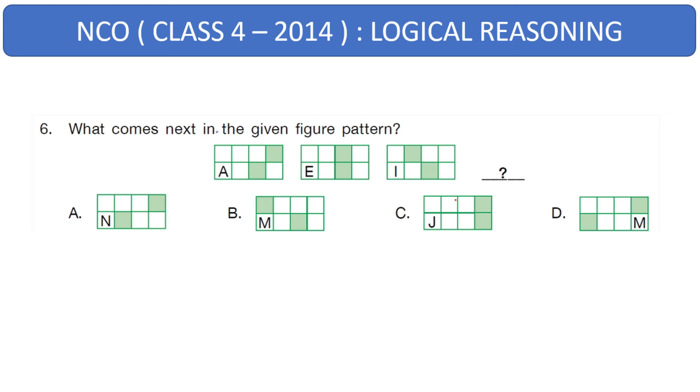Next question. What comes next in the given pattern? Here, there is a pattern given. We need to find this missing block here. If you look at the upper row, this block is moving from right to left. So in the 4th block, this will come here. In the given options, only option B has the 1st block moving to the leftmost position. Hence, that is our answer.